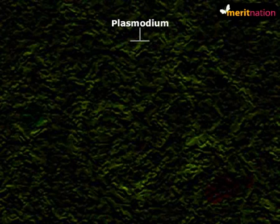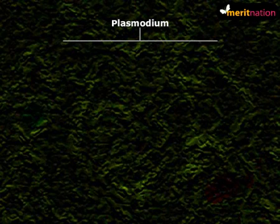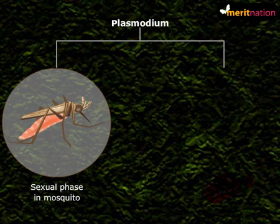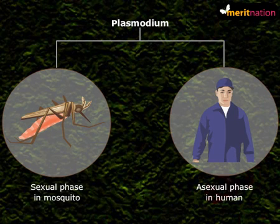Plasmodium completes its life cycle in two phases and in two hosts: the sexual cycle in the female Anopheles mosquito and the asexual cycle in humans. Let us understand the life cycle of Plasmodium.